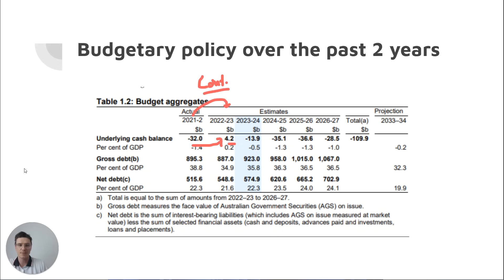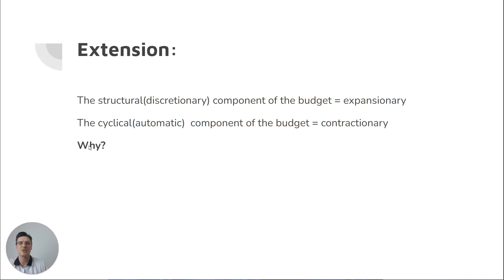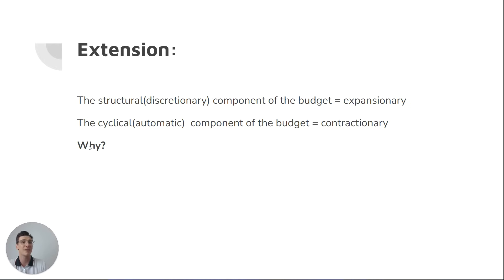Remember, you do also need to think about it as a percentage of GDP. A bit of an extension here — remember the stance technically is talking about the structural component of the budget. If we isolated the structural changes, that would indicate what the government is actually trying to do to the economy. We'd need to get rid of all the automatic stabilizers because that's not really reflective of what the government's trying to do. If you've learned it this way, just remember that; if you haven't, don't worry about it now.